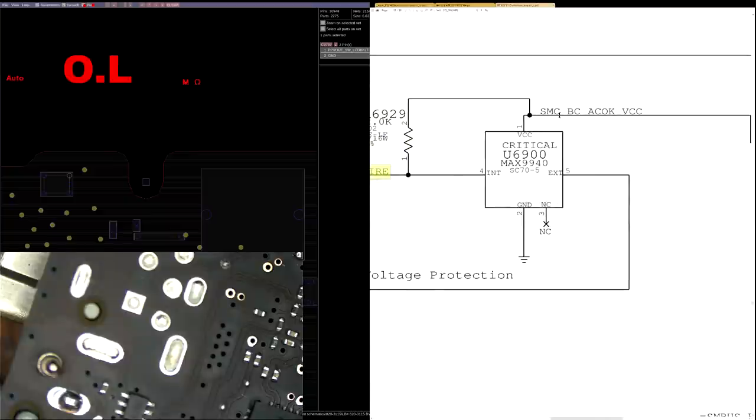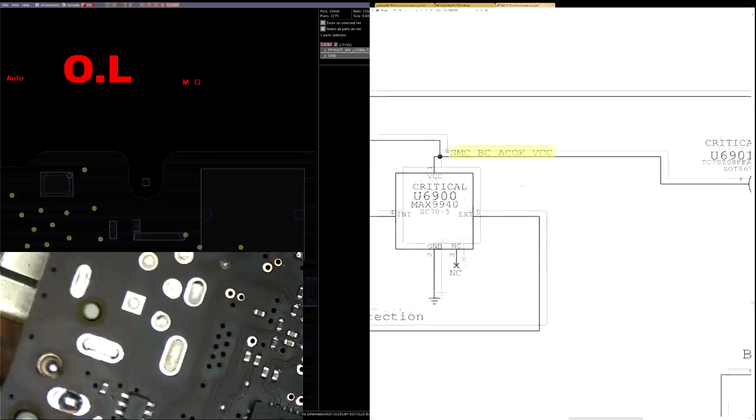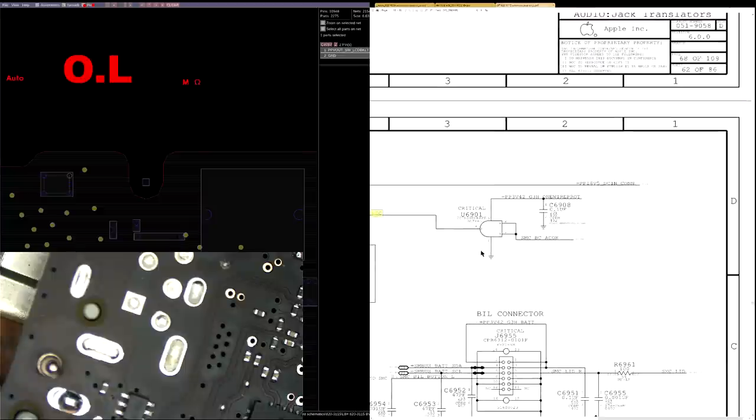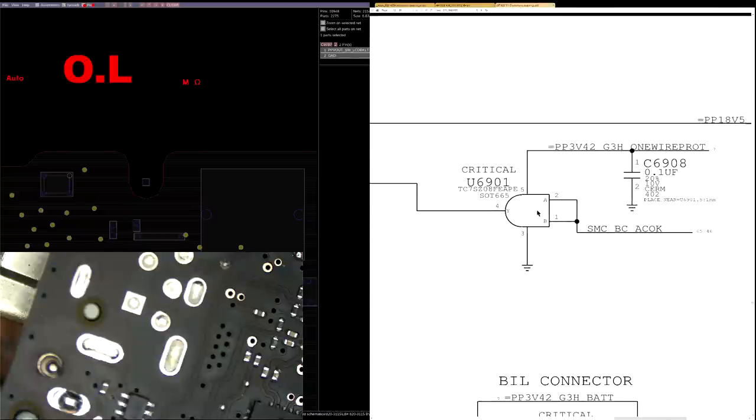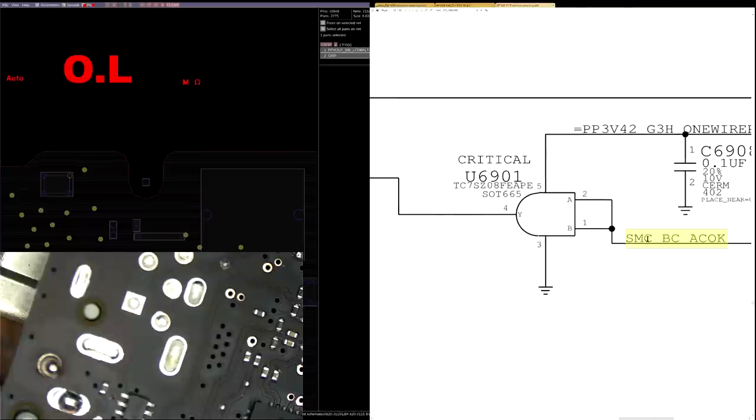In order for this chip to turn on, it needs to have 3.42 volts at pin 1, its VCC pin. Anytime you see VCC, that usually means that's the pin where the chip is going to get its power to turn on. In order for it to get that, this logic gate needs to shoot that voltage out to the VCC pin. This logic gate needs to have 3.42 volts present at pin 5, which is its power pin, to turn it on.